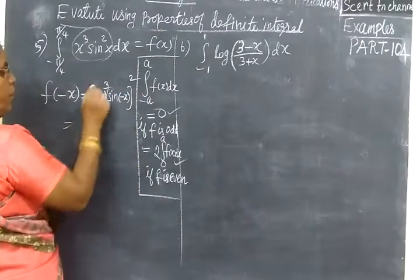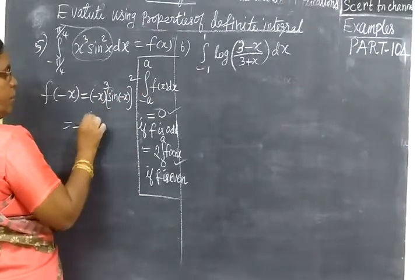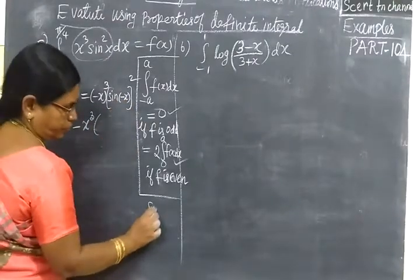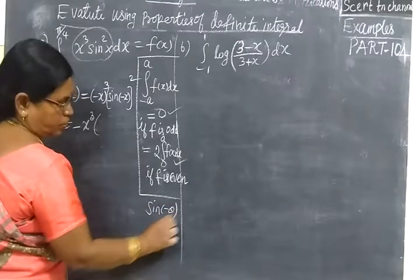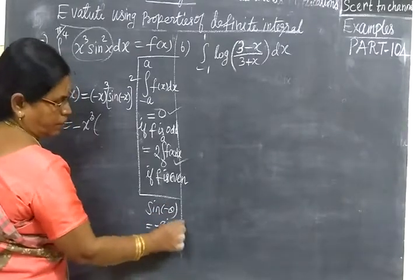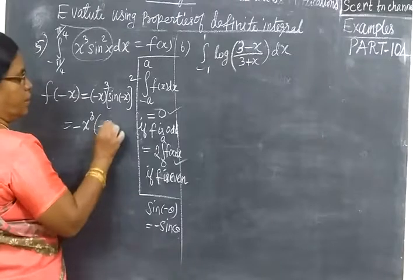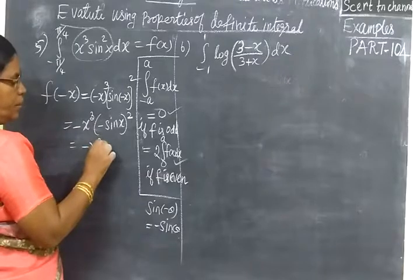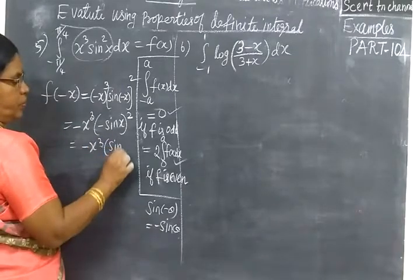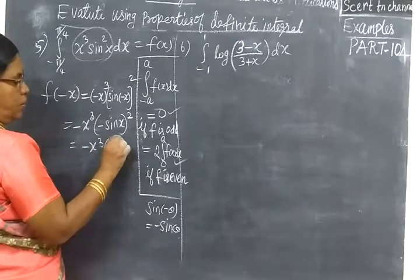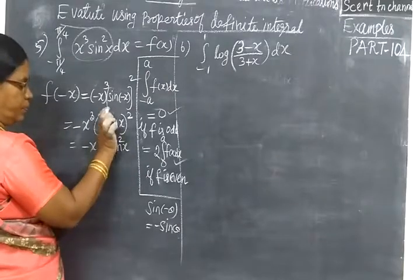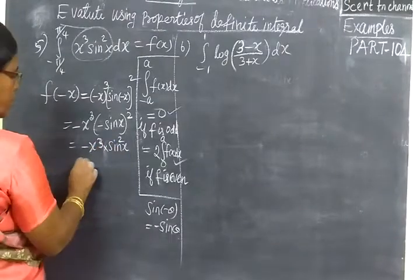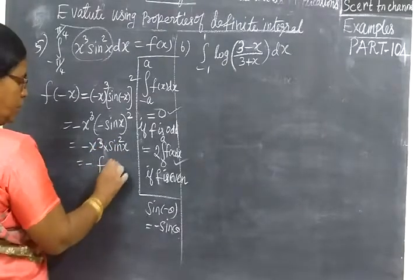Minus x cube means minus sin of minus x. Now sin of minus x is minus sin x, so this becomes minus sin x whole square, which equals sin squared x.